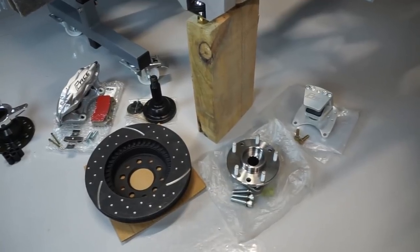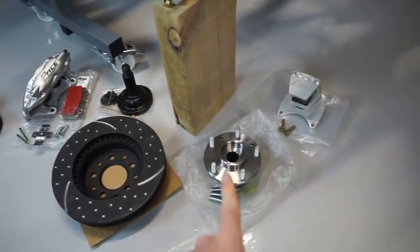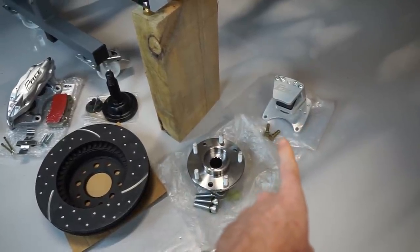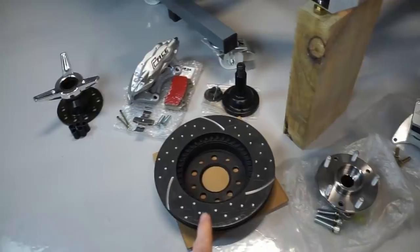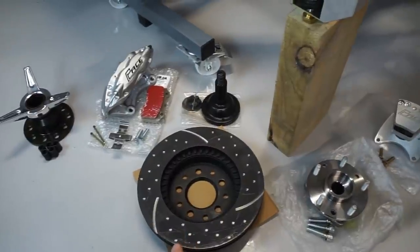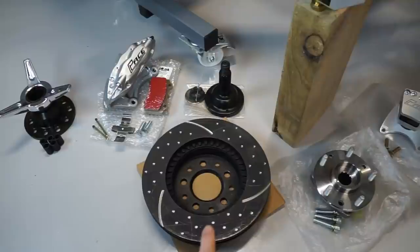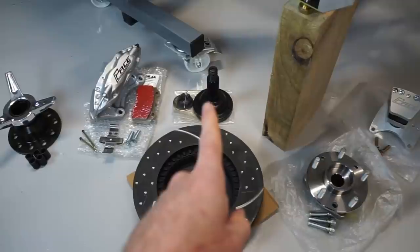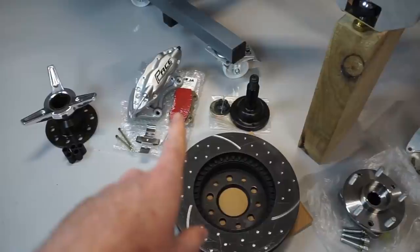Before I get started with the install, I just thought I'd quickly run through the parts that I've got laid out. So we've got the wheel bearing, the handbrake caliper and the bolts to mount that to the suspension upright, we've got the dimpled and slotted brake rotor, the outside drive shaft input shaft, the brake pads and brake caliper.